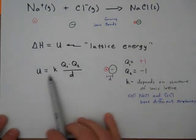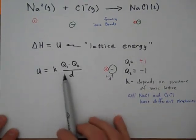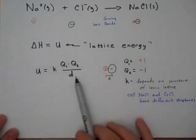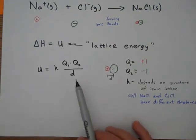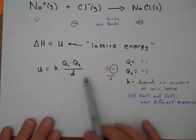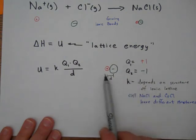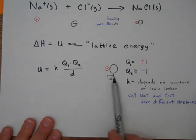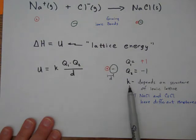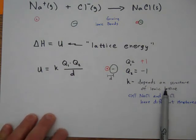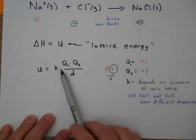Lattice energy is defined as U equals k times q1 times q2 divided by d. This looks like Coulomb's law but it's a little different. q1 and q2 are the charges on the ions—plus one and minus one in this case. d is the separation between their centers. k depends on the whole structure of the ionic lattice.